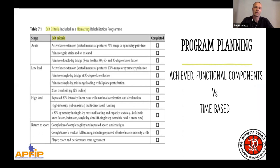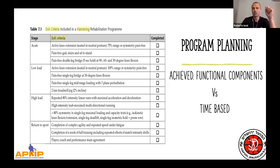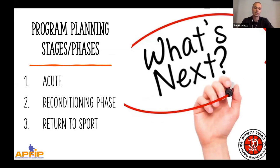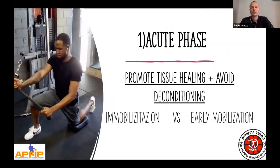We use exit criteria — for example, in hamstring rehab, in order for an athlete to move from phase one to phase two to phase three and then to phase four, we must check all the boxes. If we don't check all the boxes, the athlete won't progress to the next phase. A program must have different stages — the same stages Cristiana talked about yesterday: phase one is the acute phase, phase two is the reconditioning phase, and phase three is return to sport.